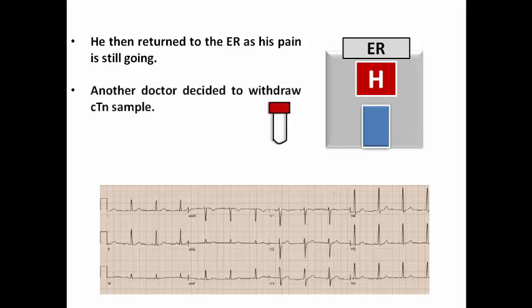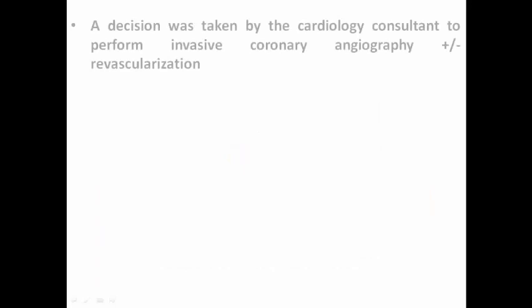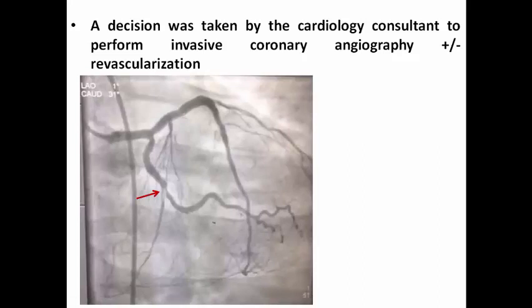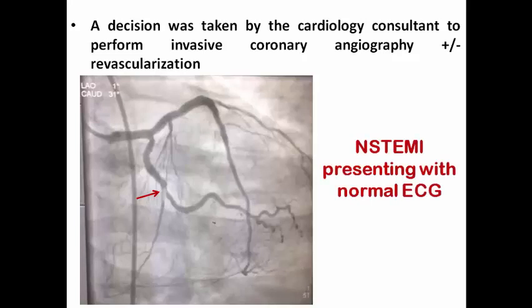Another doctor decided to draw a troponin sample, which was mildly elevated. Based on the typical chest pain, the ECG findings, and the elevated troponin, a consultant was informed who decided to perform coronary angiography plus or minus revascularization. This revealed a thrombus-containing lesion in the left circumflex causing the chest pain, and stenting was performed on this culprit vessel. The diagnosis was non-STEMI presenting with a normal ECG.